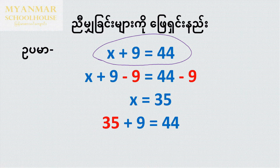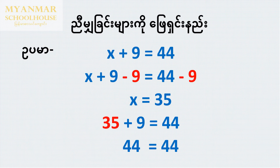35 plus 9 is equal to 44. 35 plus 9 is equal to 44. It's also equal to 44 here.